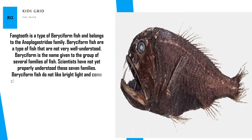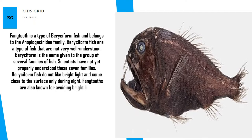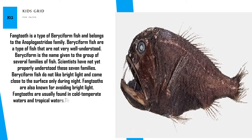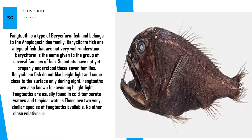Beryciform fish do not like bright light and come close to the surface only during night. Fangtooths are also known for avoiding bright light. They are usually found in cold temperate waters and tropical waters, and there are two very similar species of fangtooths. No other close relatives are known so far.